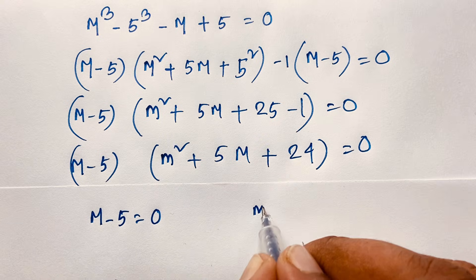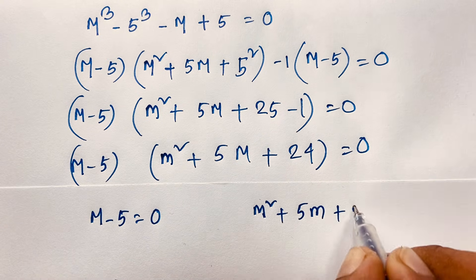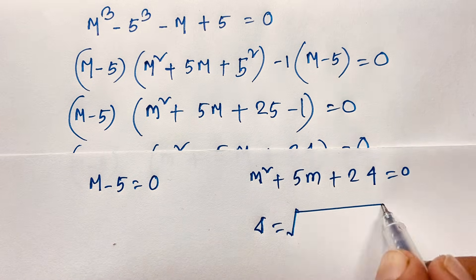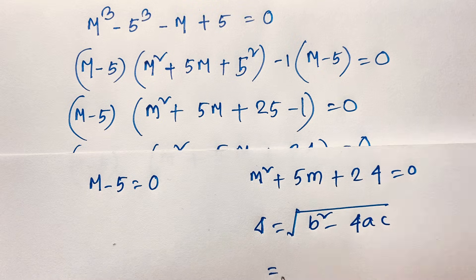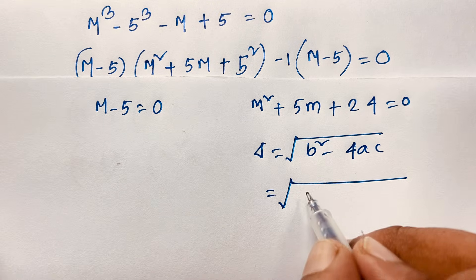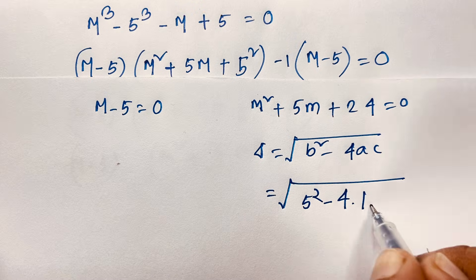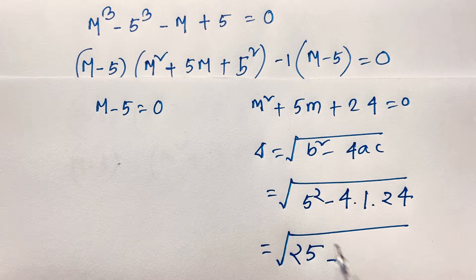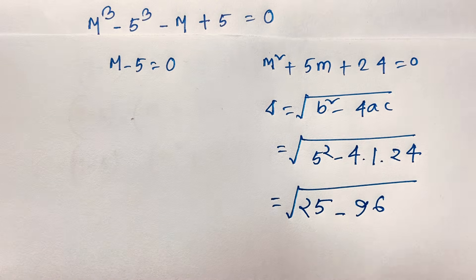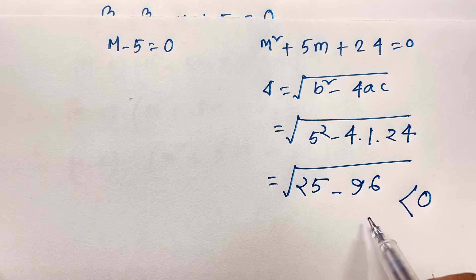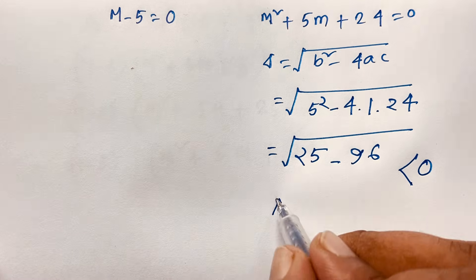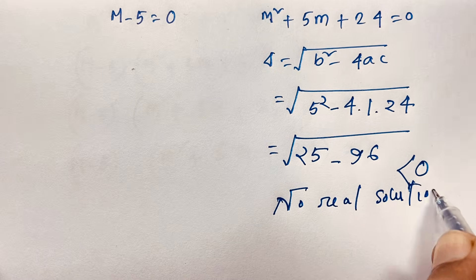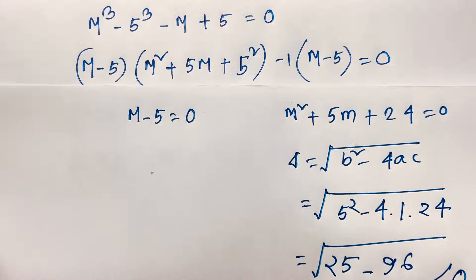For the quadratic m squared plus 5m plus 24 equals 0, we compute the discriminant: delta equals b squared minus 4ac equals 5 squared minus 4 times 1 times 24 equals 25 minus 96, which is less than zero. So there is no real solution from this case — it gives complex solutions only, which we reject since we need real solutions.